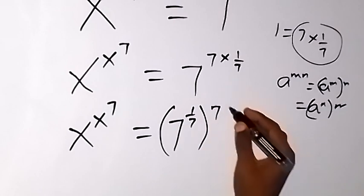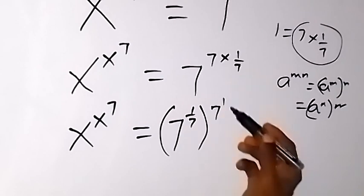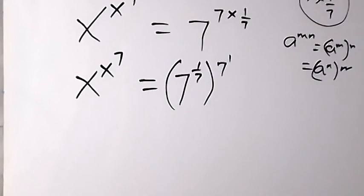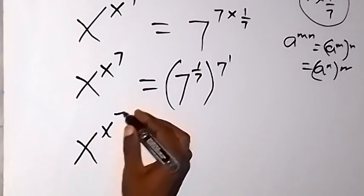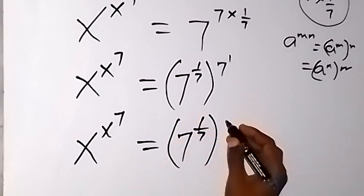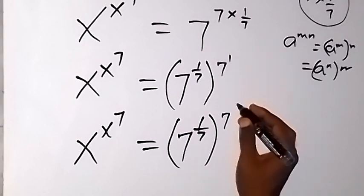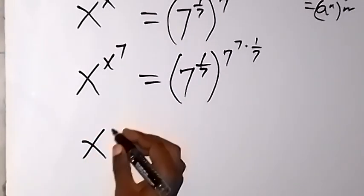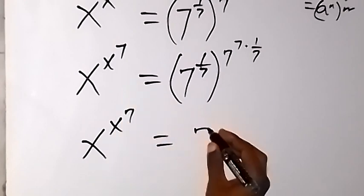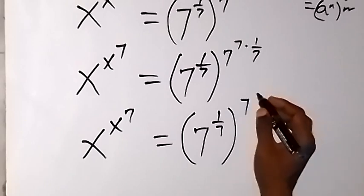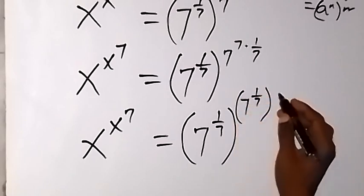And this 7 as well can be written as 7 raised to power 1. So let's repeat that process — instead of writing 7 raised to power 1, we can change this 1 to 7 times 1 over 7. These steps will become x raised to power x, raised to power 7, raised to power 7, raised to power 7 times 1 over 7. We then take 1 over 7 inside, and we have x raised to power x, raised to power 7, equal to 7 raised to power 1 over 7, then all raised to power 7, also raised to power 1 over 7, then raised to power 7.